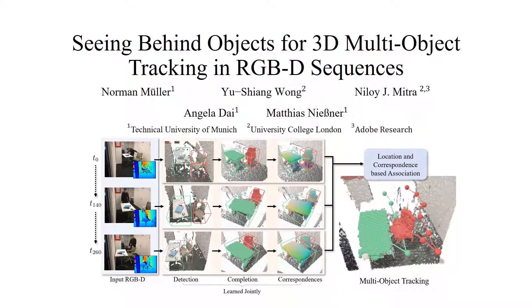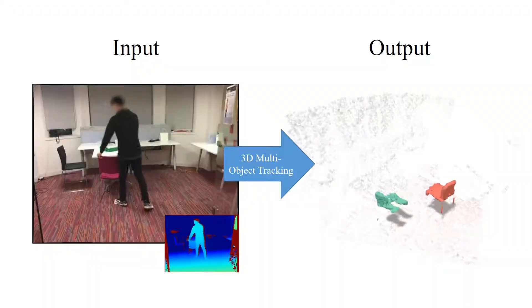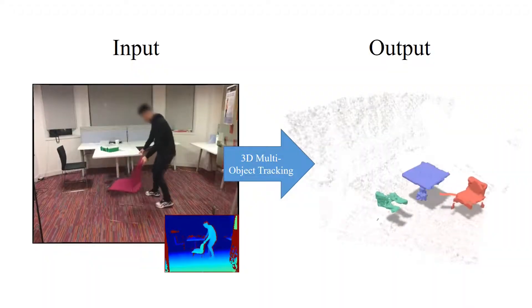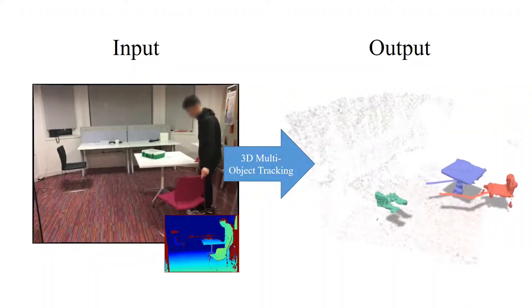We present a novel 3D multi-object tracking approach from RGB-D sequences. From an input RGB-D video, we track rigidly moving objects over time.